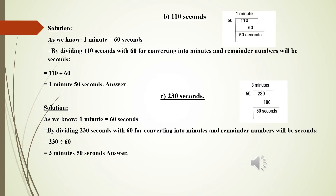Same method for part B: 110 seconds. We divide 110 by 60. 60 multiplied by 1 is 60. 110 minus 60 gives a remainder of 50 seconds. So the answer is 1 minute and 50 seconds.